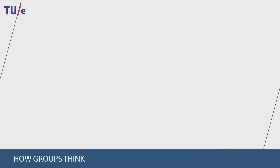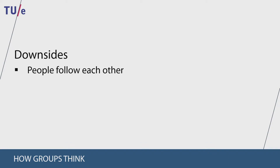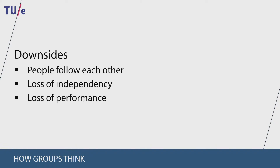When groups work together on a task or a project, they often apply brainstorming — a form of creative thinking in which all members are encouraged to generate as many ideas as possible. However, this process has a number of downsides. When people work independently, they produce a surprisingly accurate average. But when people in a group follow each other, this advantage is lost. This leads to a loss of independency, because they build on each other's ideas instead of working out new ones, resulting in a decrease in performance.